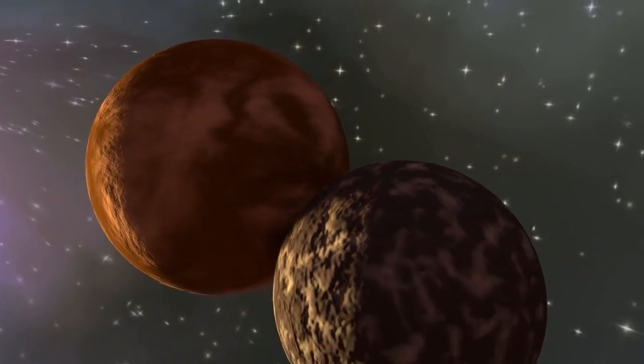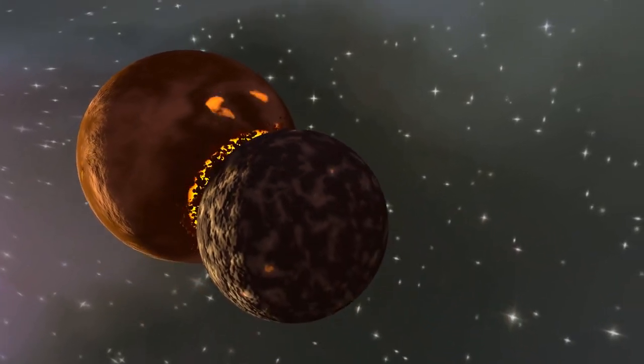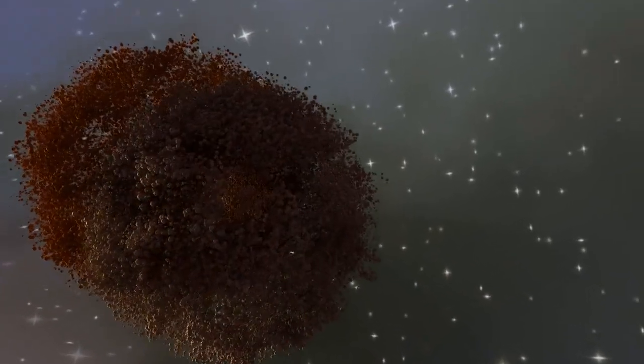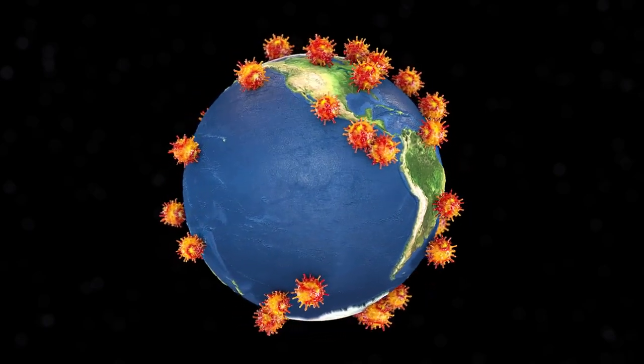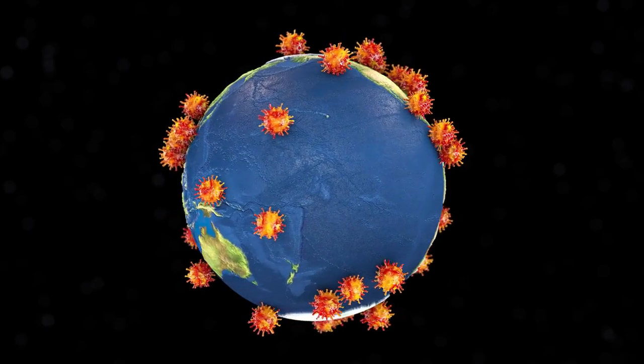These cosmic drifters could collide with one another, creating even more unpredictable trajectories. If even one of these rogue planets were to approach our solar system, the consequences could be catastrophic.